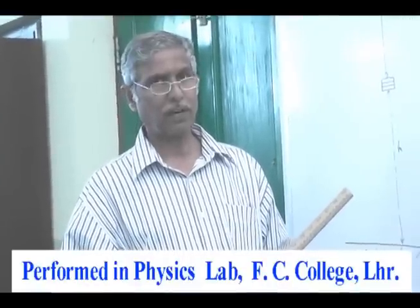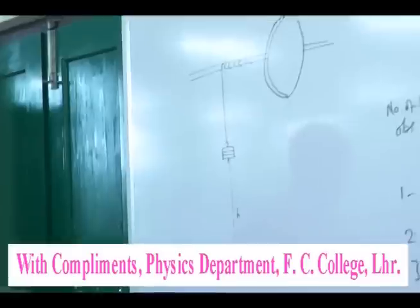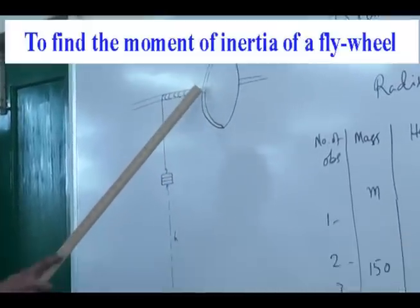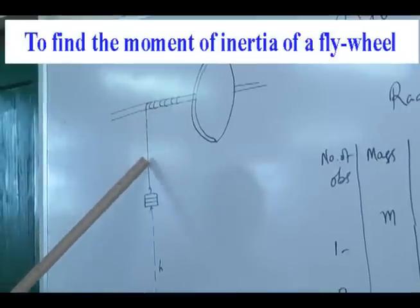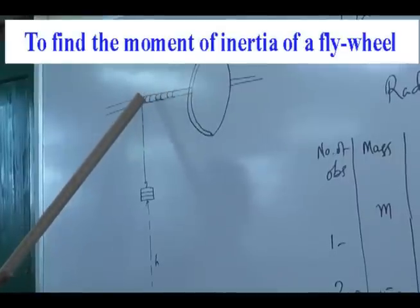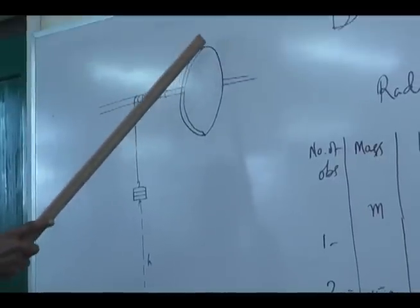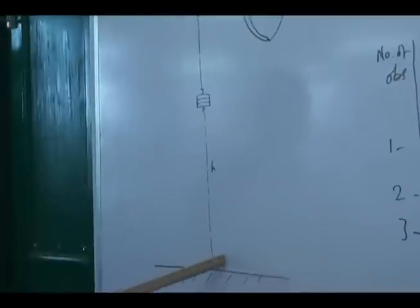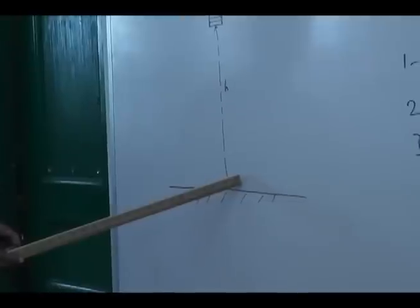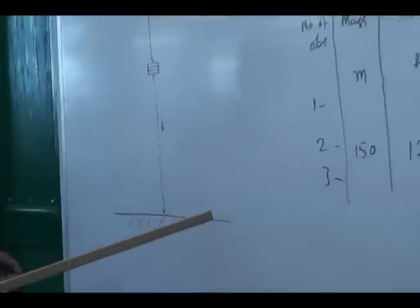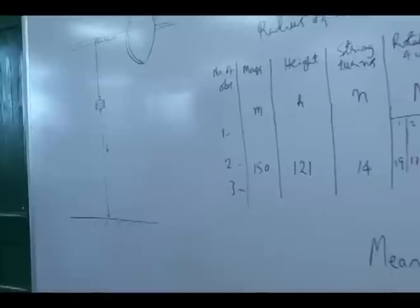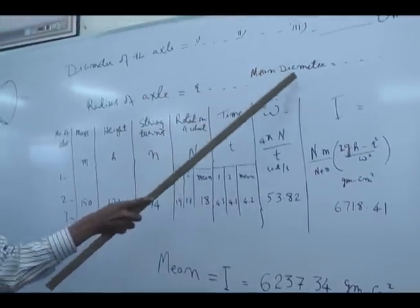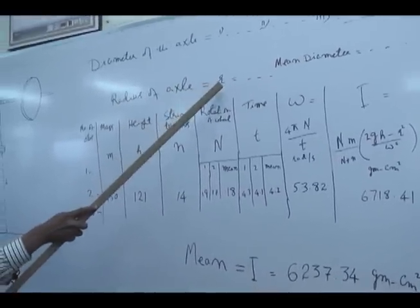The details are on the board. This is a flywheel and this is axle and this is thread. And this is number of rotation of the thread. Then rotation of the wheel, weight, height from the ground. And if you go theoretically on chart, it is just like over here. Diameter of the axle, mean diameter, radius of the axle r.